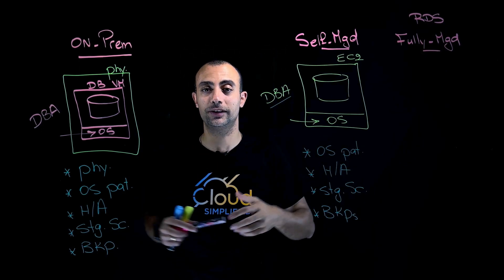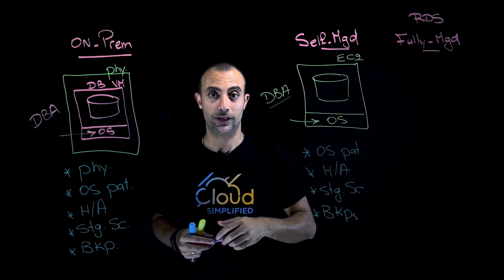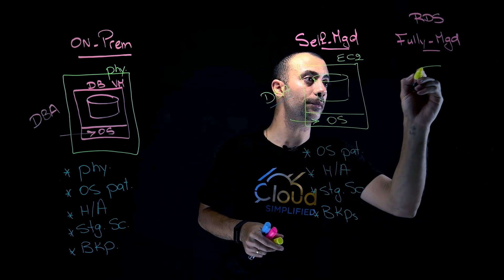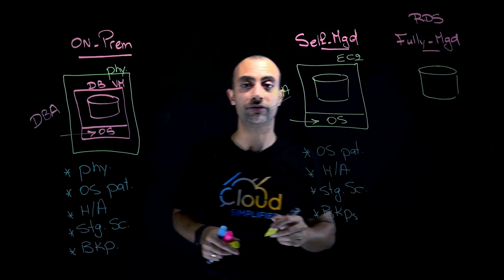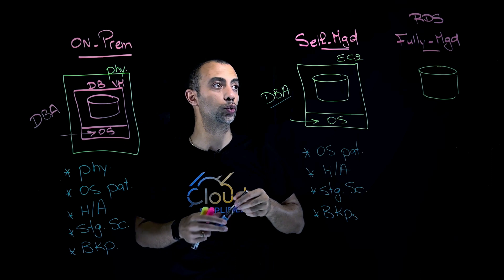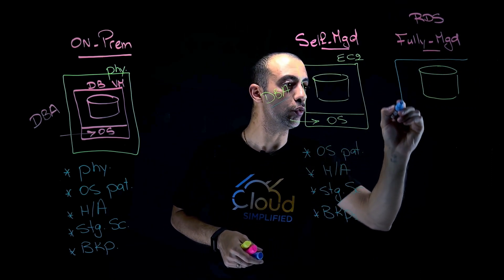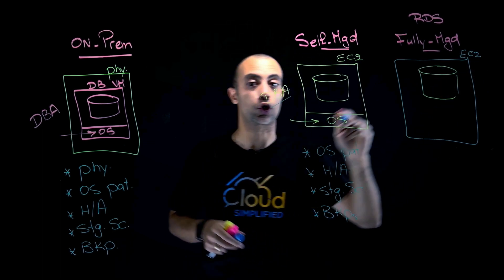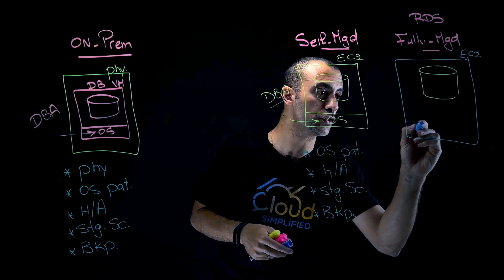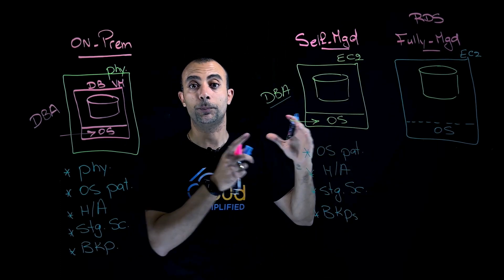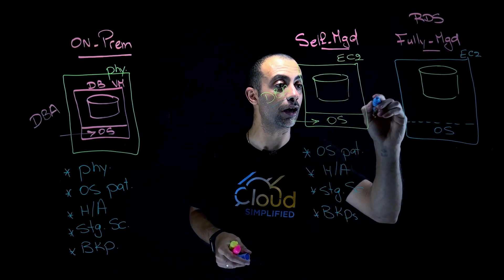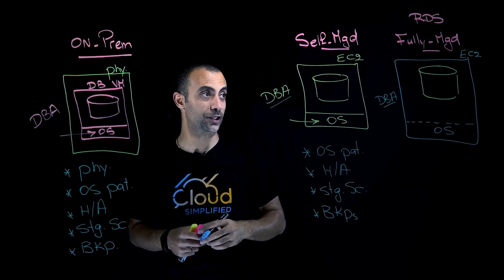The fully managed option is Amazon RDS. At the end of the day, all you need is a database engine. In RDS, you go through a wizard with simple clicks, choose which database engine you'd like, set some parameters, and at the end AWS will automatically provision the EC2 instance on your behalf. Since AWS provisions and operates the instance, you don't need to patch the operating system — AWS handles that.